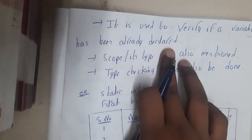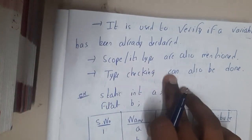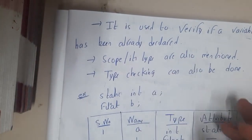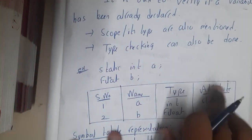Scope, type, attributes, and all those things will be mentioned. Type checking can also be done. For a small example: serial number, name, type, attribute. Entry 1: 'a', type is int, attribute is static. Entry 2: 'b', float.